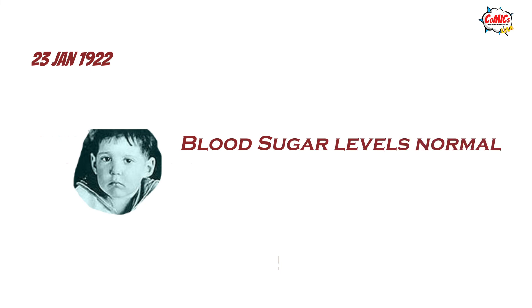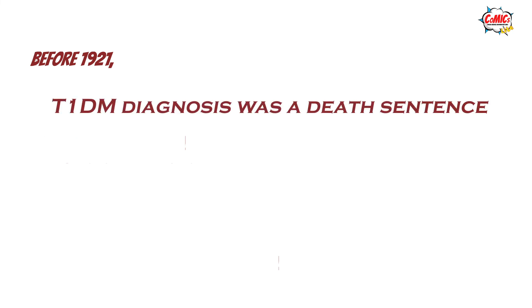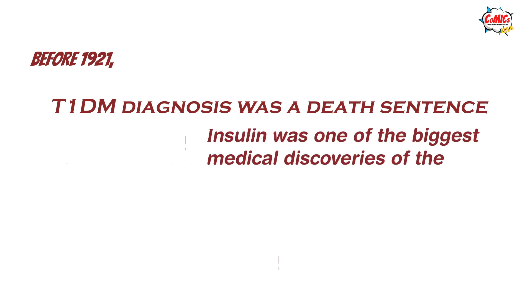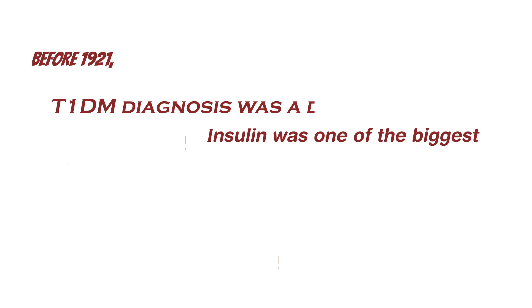While this was a partial success, Colip worked harder to further purify insulin. Leonard's second injection on the 23rd of January was a complete success, where his blood sugar levels returned to normal. Before 1921, anyone who was diagnosed with type 1 diabetes that lived for more than a year or two was considered an exception. Insulin was one of the biggest medical discoveries of the 20th century and is still being used to treat diabetes to this day.